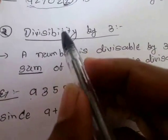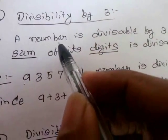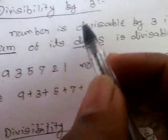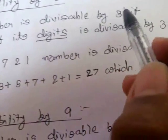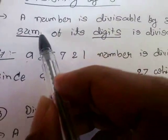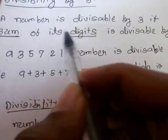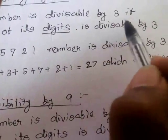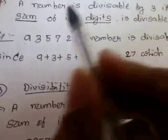So we can say that the whole number is divisible by 2. The second rule is divisibility by 3. The rule says a number is divisible by 3 if the sum of its digits is divisible by 3.